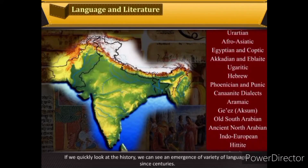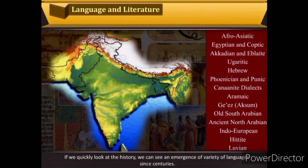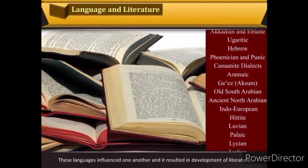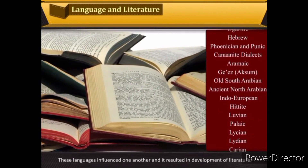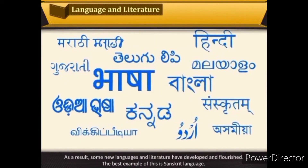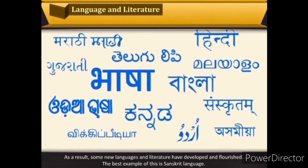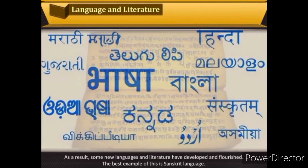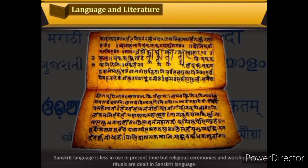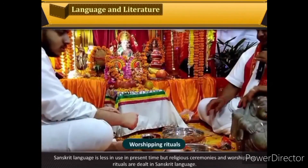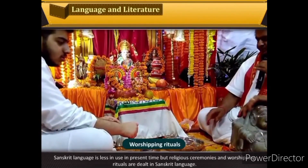We can see an emergence of a variety of languages since centuries. These languages influenced one another, resulting in the development of literature. Some new languages and literature developed and flourished — the best example of this is Sanskrit. Sanskrit is less in use in the present time, but religious ceremonies and worshipping rituals are still conducted in Sanskrit.